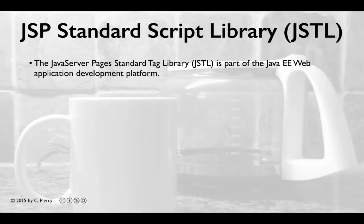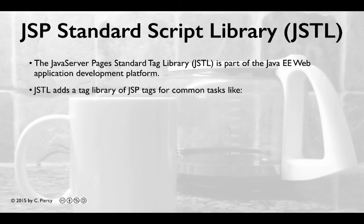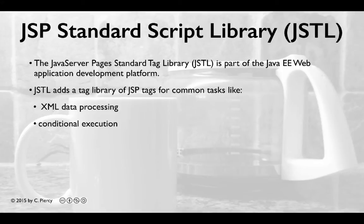The Java Server Pages Standard Tag Library, or JSTL, is part of the Java EE Web Application Development Platform. JSTL adds a tag library of JSP tags for common tasks like XML data processing, conditional execution, database access, loops, and internationalization, to name a few.